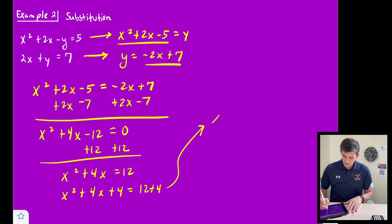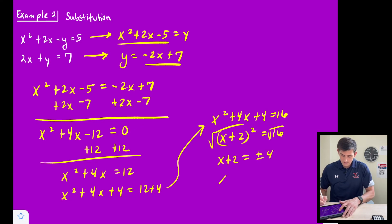So we'll come up here. So we have x² + 4x + 4 = 16. This would be (x + 2)² = 16. We take the square root. So we get x + 2 = ±4. And now let's subtract 2.